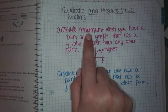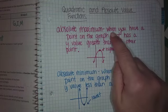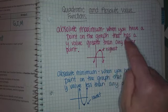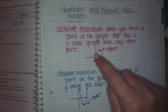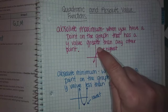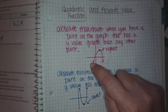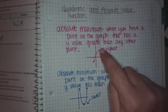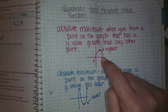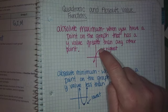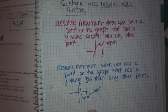An absolute maximum — just like the word maximum means the highest — is when you have a point on the graph that has a y-value greater than any other point. It's the highest point. You may not have seen graphs that make this U-shape yet, but a graph can make a U-shape or a V-shape and have a maximum point.